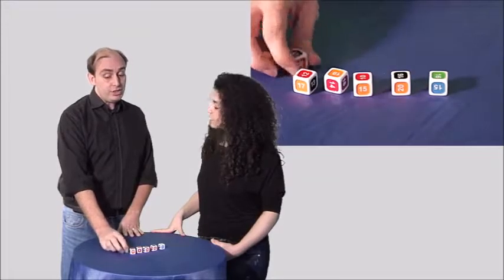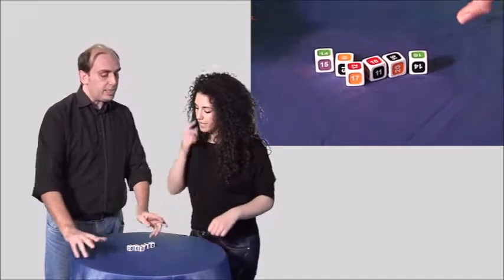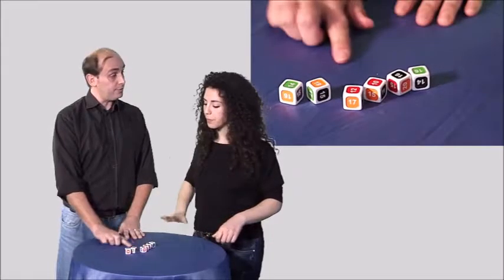Here I have some dice and on each die there is a two-digit number, and on each side there is a different two-digit number. So what I'll do is turn around now and you must throw the dice and make sure that the colors on the top face of the dice are different.